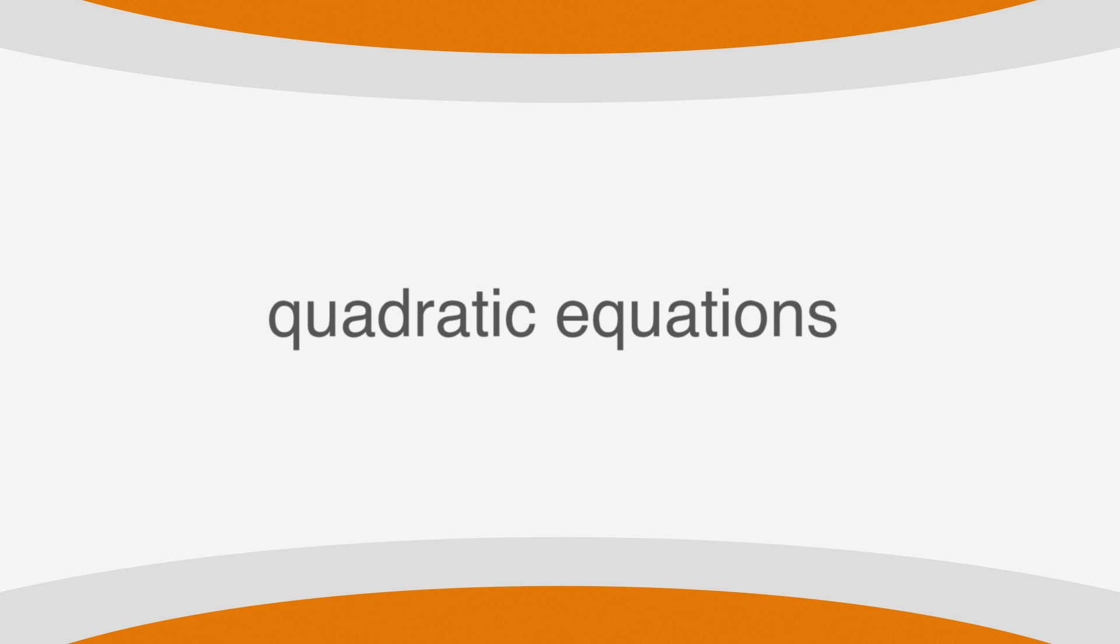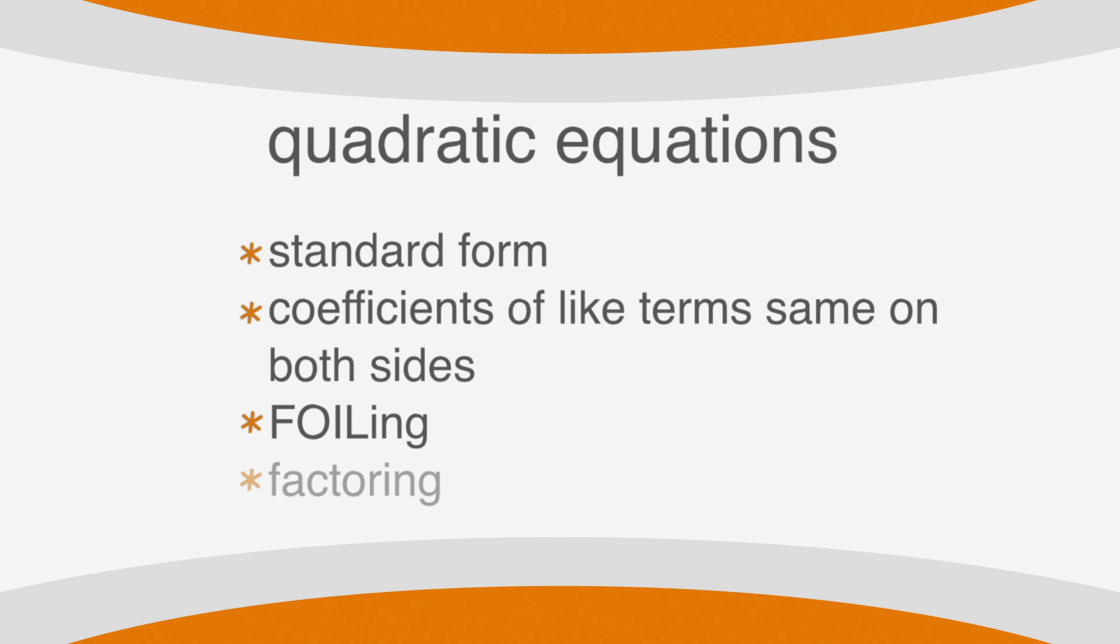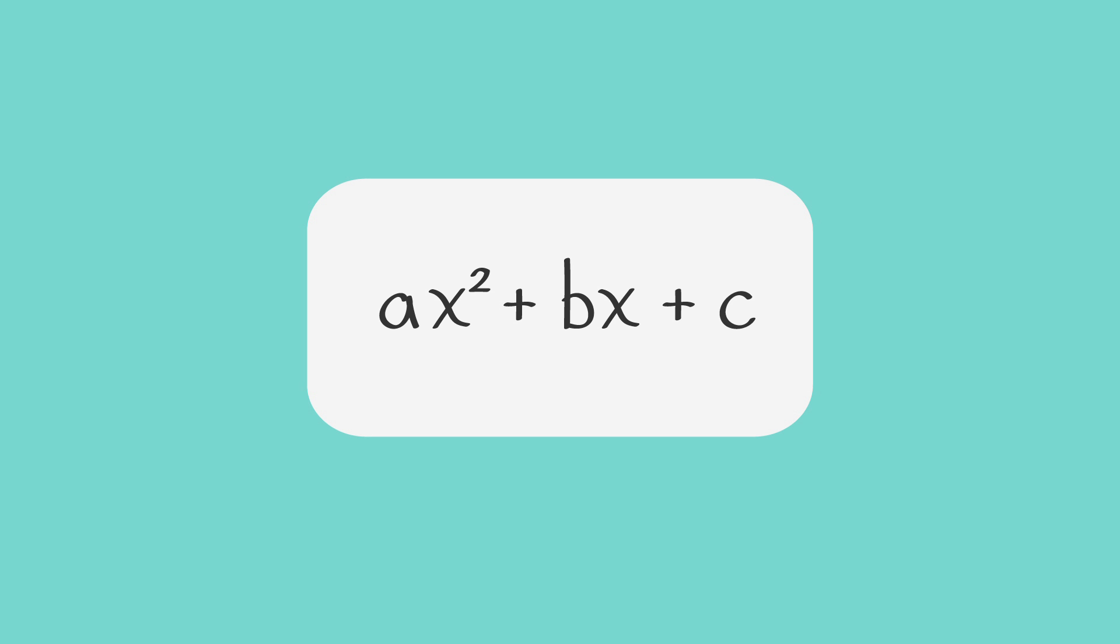On the SAT, you can expect to see the following types of quadratic equations: the standard form of a quadratic equation, the fact that the coefficients of like terms must be the same on both sides of an equation, foiling, and lastly, factoring quadratic equations. Don't worry if you don't remember these now, we'll go over them in detail.